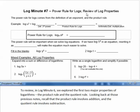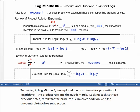To review, in log minute 6 we explored the first two major properties of logarithms: the product rule and the quotient rule. Looking back at those previous notes for log minute 6, recall that the product rule involves addition and the quotient rule involves subtraction.